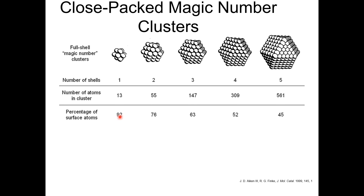For the first shell with 13 atoms, the percentage of surface atoms is the highest at 92% — meaning 92 atoms can be found at the surface. Because it has fewer atoms and is a smaller shell, more atoms sit at the surface compared to the volume. For the second shell, the number of atoms increases to 55 and the percentage of surface atoms decreases to 76%.